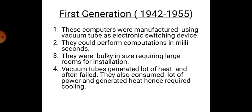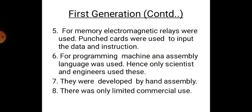First generation computers were bulky in size, requiring large rooms for installation, since vacuum tubes were large. The switching time in vacuum tubes was slow, so computers operated at the speed of milliseconds. Vacuum tubes generated a lot of heat and often failed. They also consumed a lot of power and generated heat, hence requiring cooling systems.